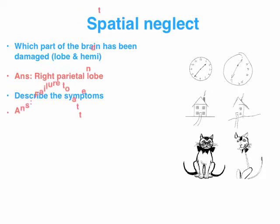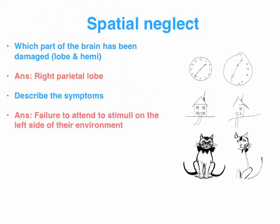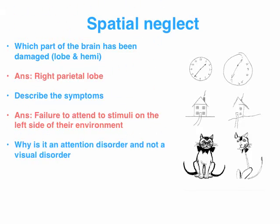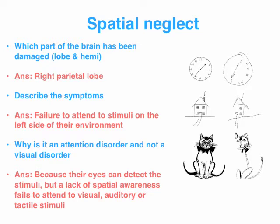In terms of the symptoms, we need precision. You'll say a failure to attend to stimuli on the left side of their environment — just saying one side doesn't cut it. A key point is that it's not a visual disorder. Their eyes can detect the stimuli on the left side; it'll be converted into electrochemical energy and transmitted to the visual cortex. But their internal radar system will fail to process stimuli on the left side. So when talking about spatial neglect, don't say a failure to see — say a failure to attend, because we need precision.